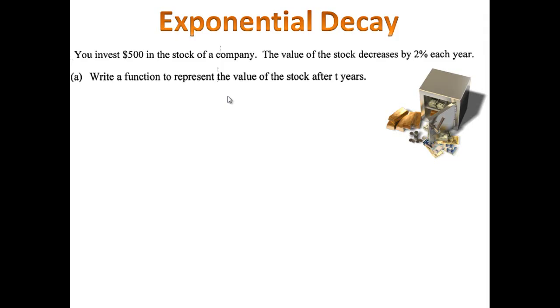First identify the value of the variables, a, r, and t. And then write a function that represents the value after t years. That means your equation will have the letter t in it. Please use the last example as a guide. Pause the video here and then come on back when you're finished.